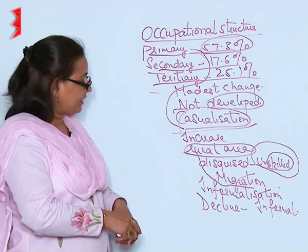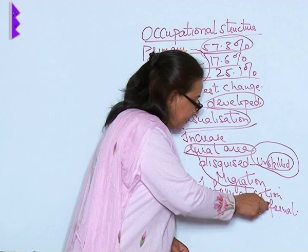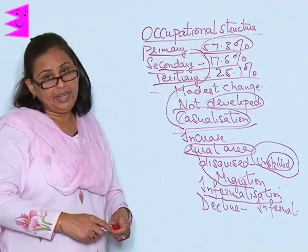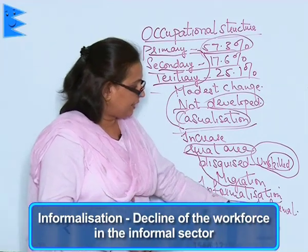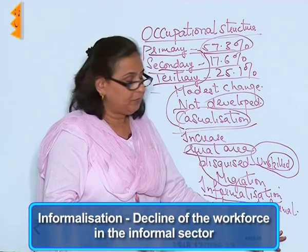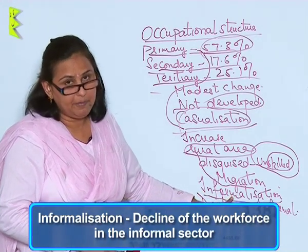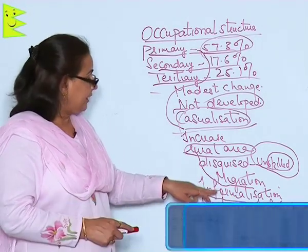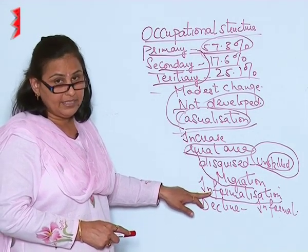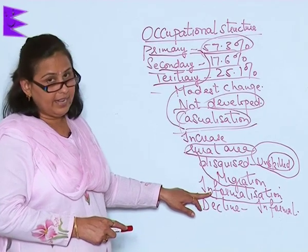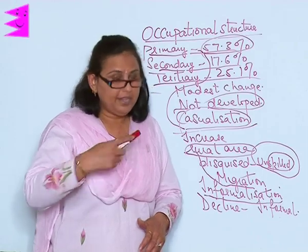The next issue is informalization. Informalization occurs when there is a decline of the workforce in the formal sector, and more move into the informal sector. There are two kinds of sectors: the organized sector and the unorganized sector, which will be discussed in detail in the next segment.